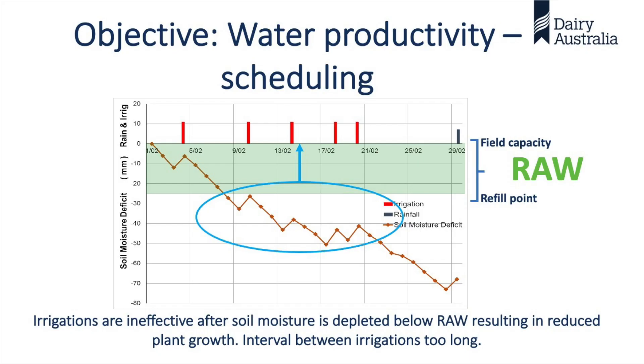This is the objective of scheduling, and James will show the same graph and explain it more. What we want to avoid is a soil moisture probe line that looks erratic — that's what we're working against.